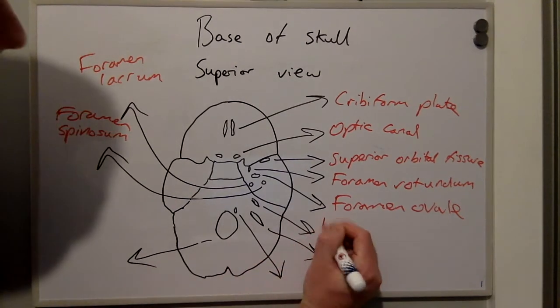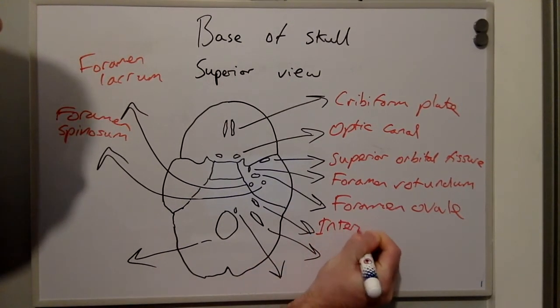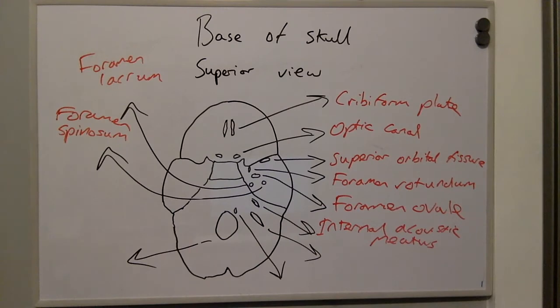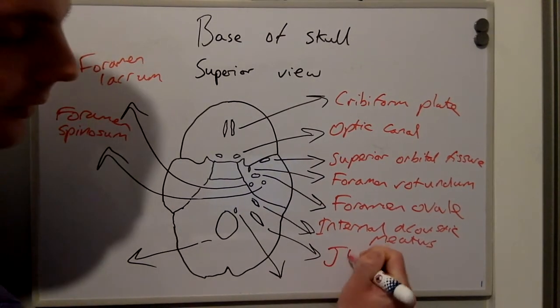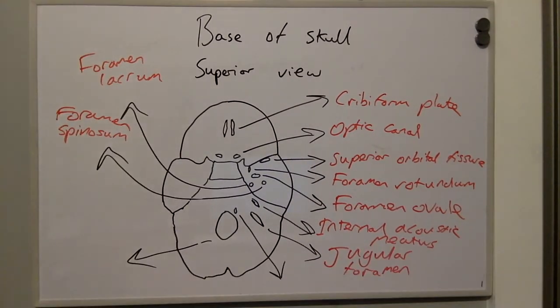Here we have the internal acoustic meatus. Inferior to this we have the jugular foramen. And medial to the jugular foramen we have the hypoglossal canal.